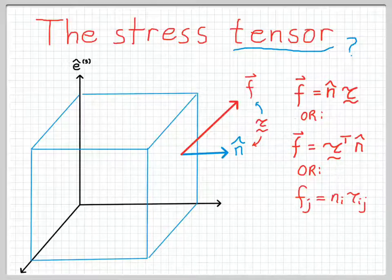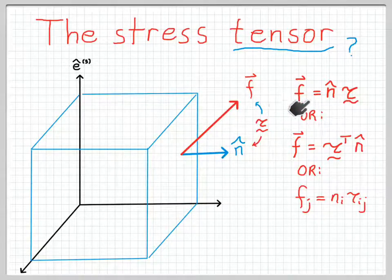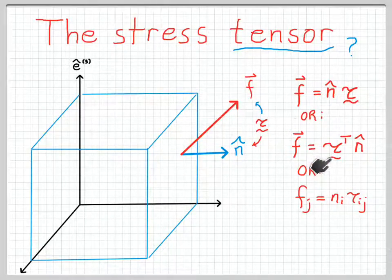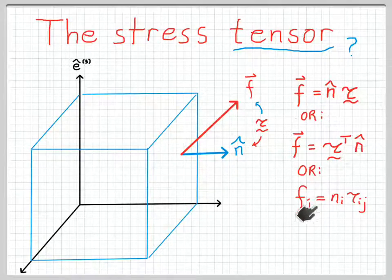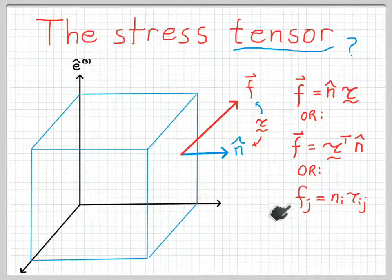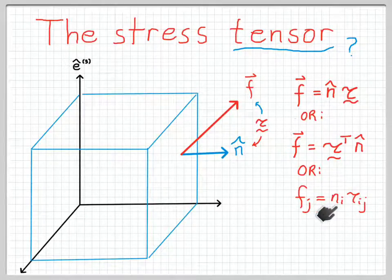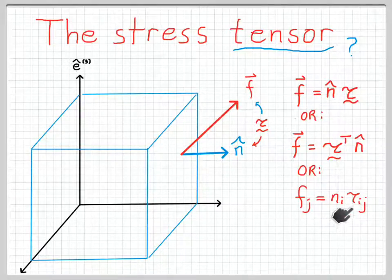Here's what that relationship looks like. The force is equal to the unit vector times the stress tensor, or equivalently the transpose of the stress tensor times the unit vector, or in index notation: the j-th component of the force equals the i-th component of the unit vector times tau_ij, summed over i according to Einstein's summation convention.